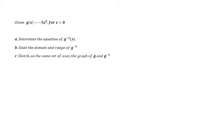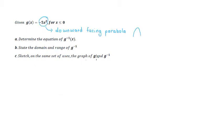In the previous example we looked at this exact function G of X, but now the difference is that the A value is negative. So while we were looking at an upward facing parabola in the previous example, now we're looking at a downward facing parabola. We still have the same restriction: X values less than or equal to zero.